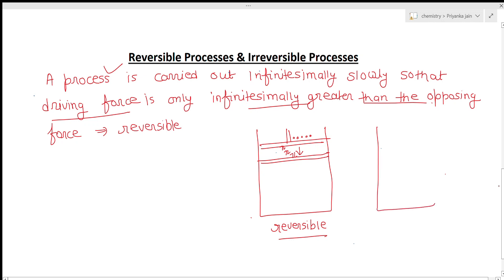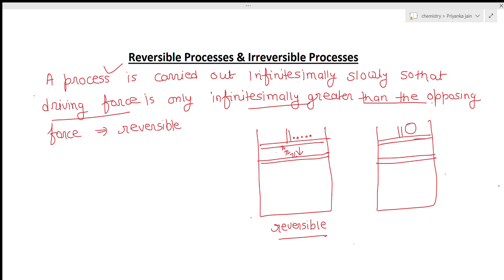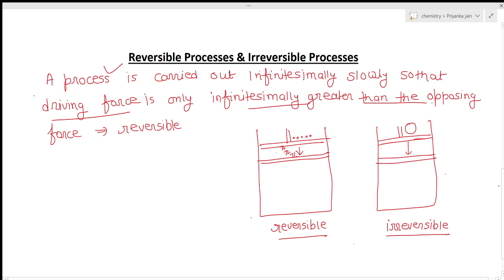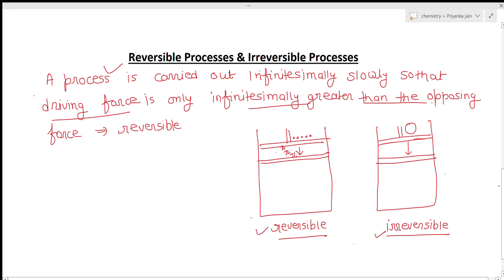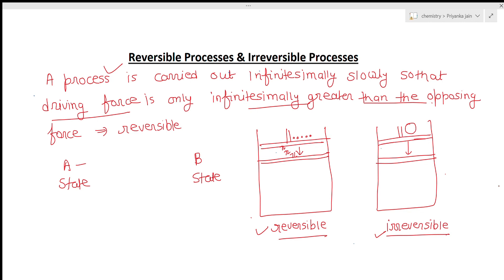When the system is not compressed slowly but directly — applying a large pressure and pushing the piston straight from one position to another — such a process is called irreversible. Here the process does not happen in infinite steps; it happens directly. In a reversible process between states A and B, there are infinite intermediate steps, each reversible, whereas in an irreversible process it happens directly.